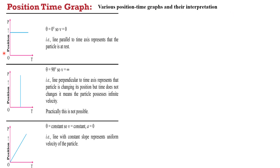Position-time graph: various position-time graphs and their interpretations. On the x-axis we have time and on the y-axis we have position or displacement. A horizontal line represents θ = 0°, so V = 0 — a line parallel to the time axis means the particle is at rest, not changing its position, so its velocity is zero.